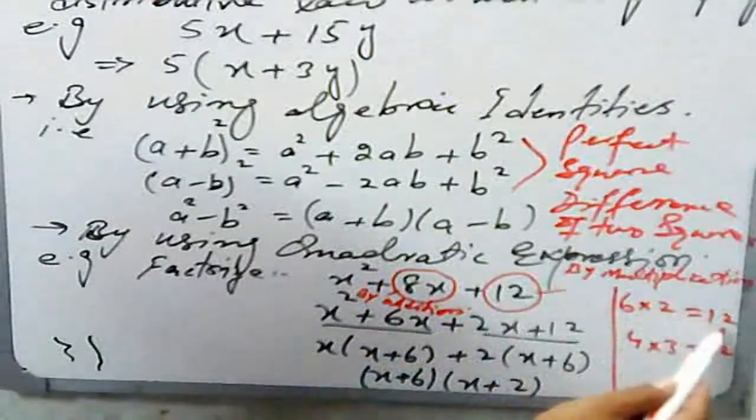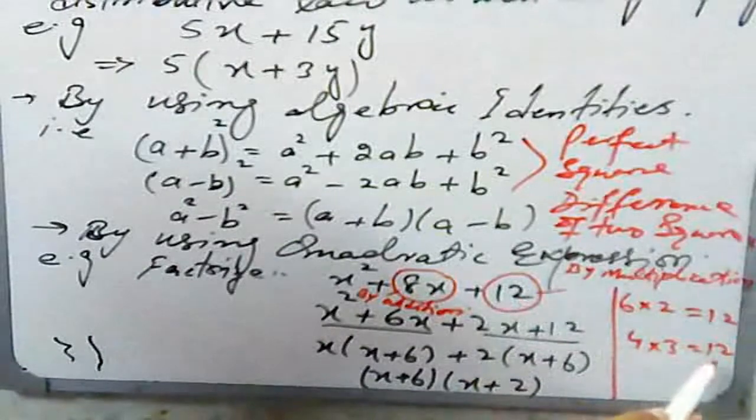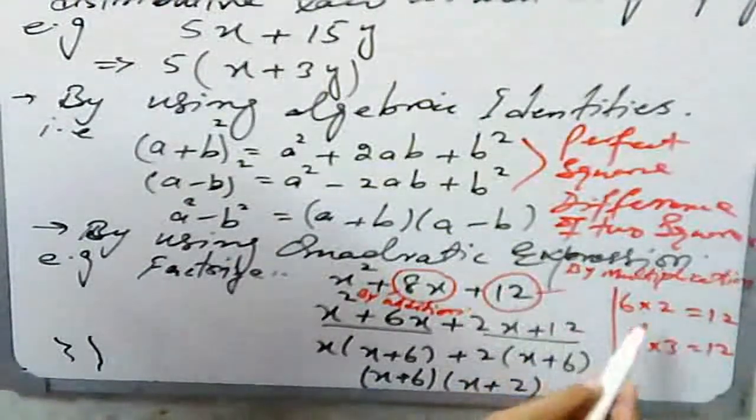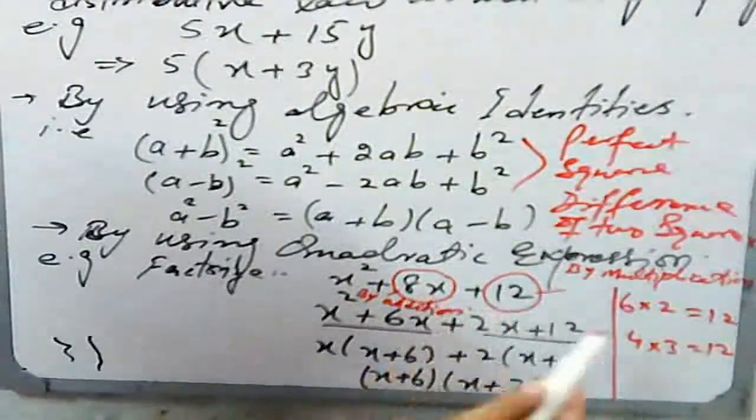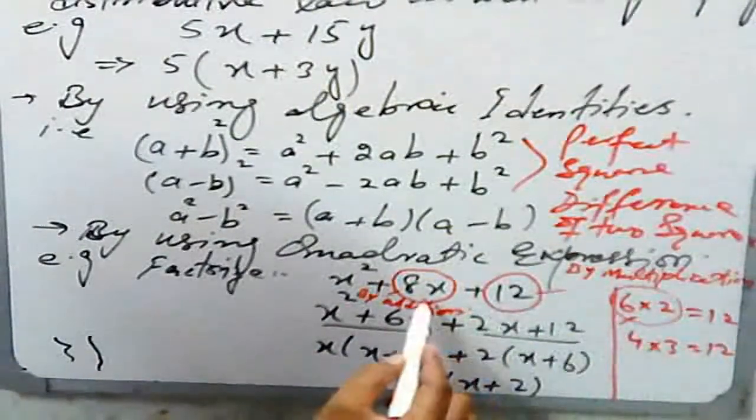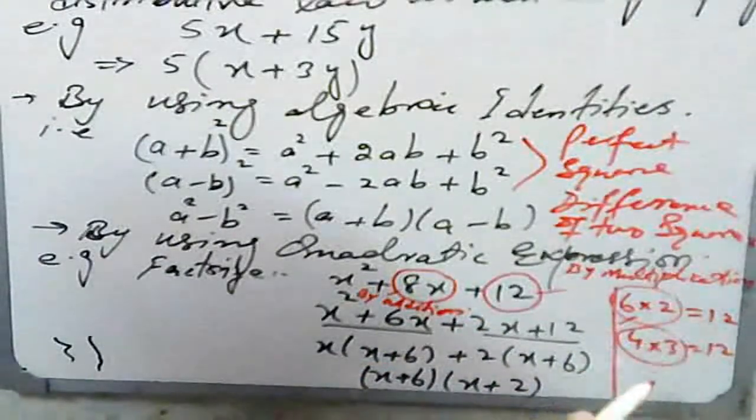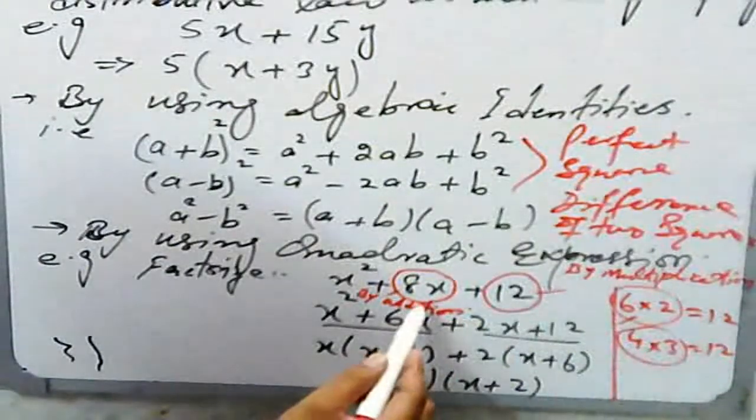You will get the same result by multiplication, but by addition: if we add 6 and 2, we get 8x. But if we add 4 and 3, we get 7x. We don't need 7x, so this means 6 and 2 are the perfect factors.